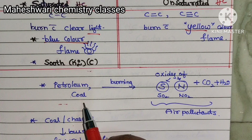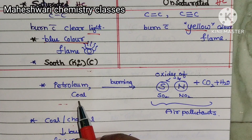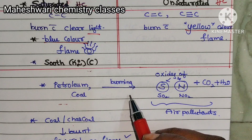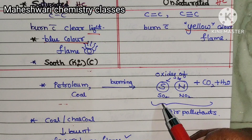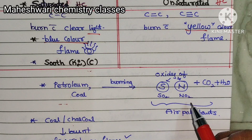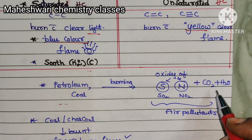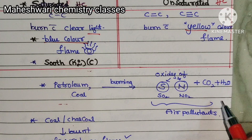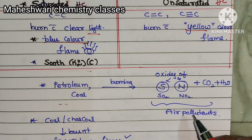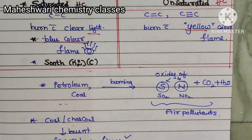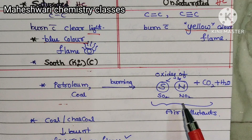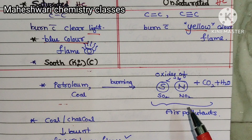Petroleum or coal burning involves a burning reaction and forms oxides of sulfur and nitrogen — such as sulfur dioxide and nitrogen dioxide — along with carbon dioxide gas and water. Sulfur dioxide and nitrogen dioxide are air pollutants.